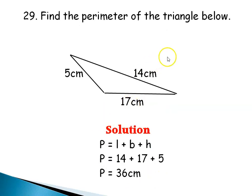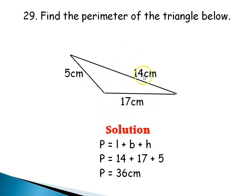Question 29: Find the perimeter of the triangle below. The perimeter is just the sum of all sides: 14 plus 17 plus 5. Adding the three sides gives 36 centimeters. So the perimeter of this triangle is 36 centimeters.